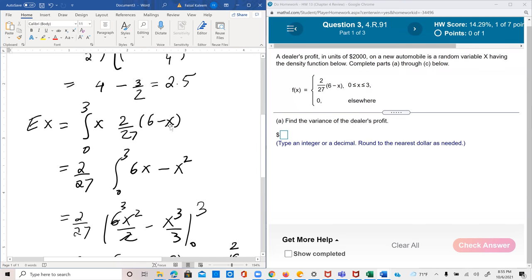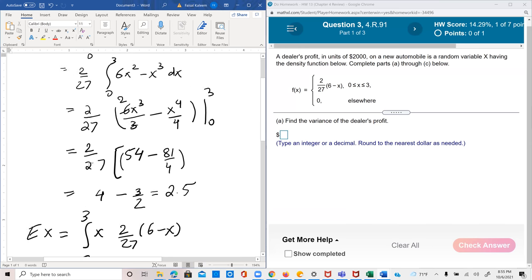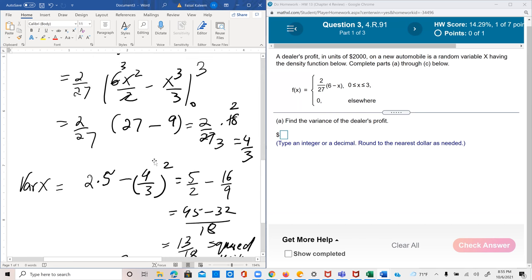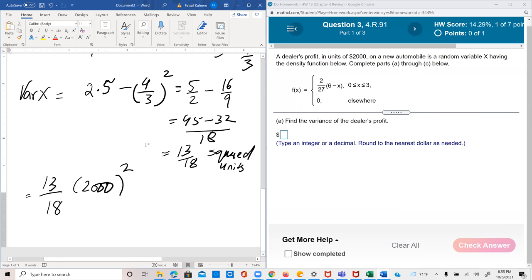So if we were just looking at for example the expected value of x, like this 4 thirds, if you want to convert it into actual numbers then you would multiply this with 2,000 because the expected value is in normal units, not the squared ones. So let's see what this simplifies to. That's 4,000,000 to 13 over 18.